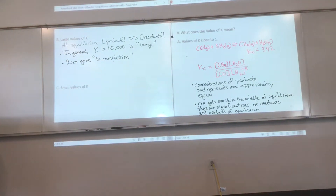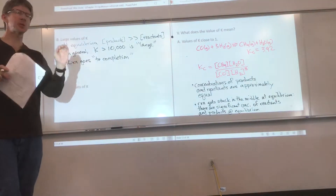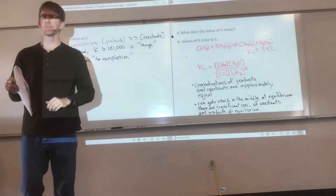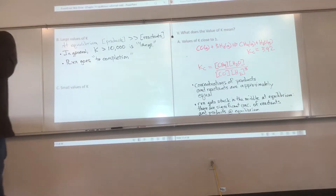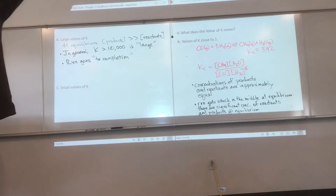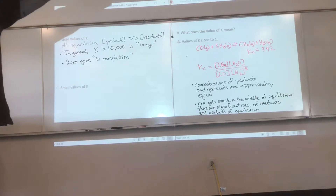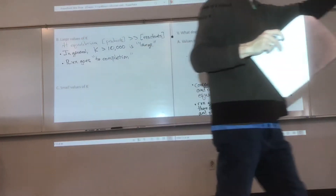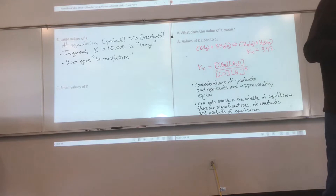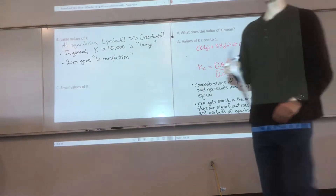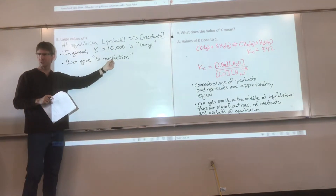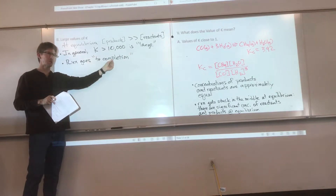I put 'goes to completion' in quotes because in every reaction in Chem 401, there are some reactants left over. Even for a reaction where the K value was 10^94, that reaction has not gone 100% to completion—it went 99.9999...%. No reaction goes truly to completion now that we understand equilibrium constants.